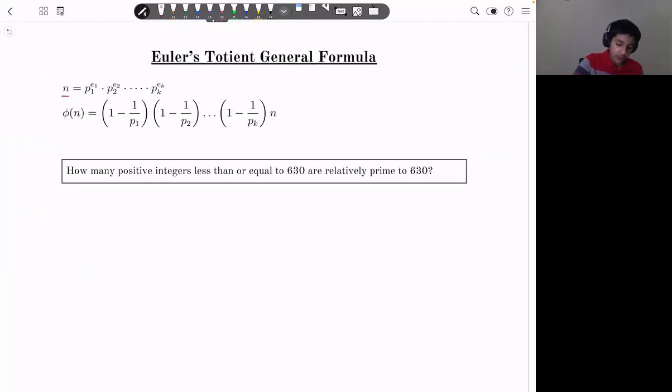If n is the prime factorization p1 to the e1 times p2 to the e2 all the way to pk to the ek, totient of n, or the number of numbers relatively prime to n, is just 1 minus 1 over p1 times 1 minus 1 over p2 all the way to pk times the value n.